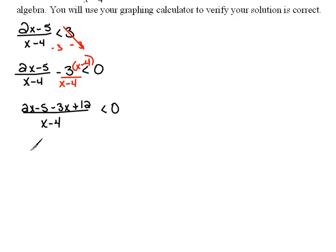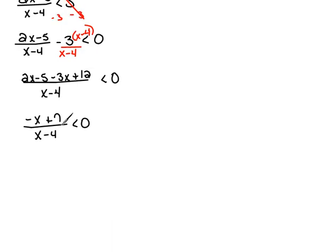2x minus 3x would be negative x, and negative 5 plus 12 would be plus 7 over x minus 4 less than 0. Now we have a simplified fraction.